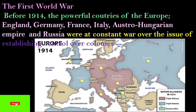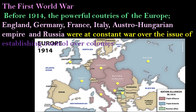So before 1914, what was the condition of Europe? The First World War. Before 1914, the powerful countries of Europe like England, Germany, France, Italy, Austro-Hungarian Empire and Russia were in constant conflict over the issue of establishing control over the colonies. That was the condition before 1914.